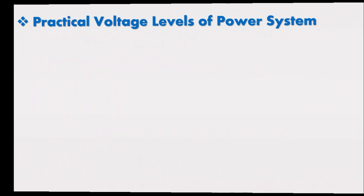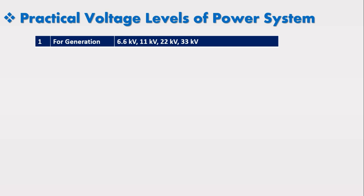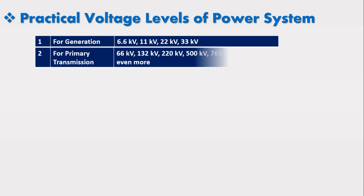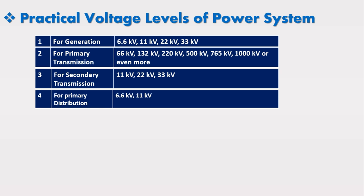Now I am going to discuss the practical voltage levels of power systems. All around the world, generation of electric power is mostly carried out at 6.6 kV, 11 kV, 22 kV, or a maximum of 33 kV. Primary transmission is carried out at 66 kV, 132 kV, 220 kV, 500 kV, 765 kV, 1000 kV or even more in different countries. Secondary transmission is carried out at 11 kV, 22 kV, and 33 kV. Primary distribution is carried out at 6.6 kV or 11 kV, and secondary distribution is carried out at 230 volt up to 400 volt.